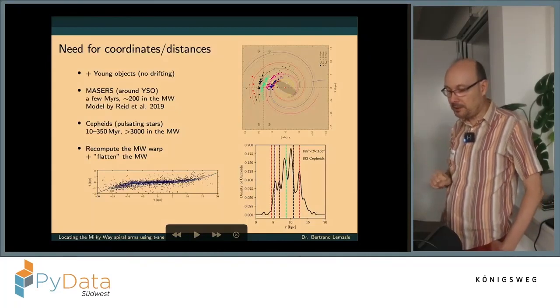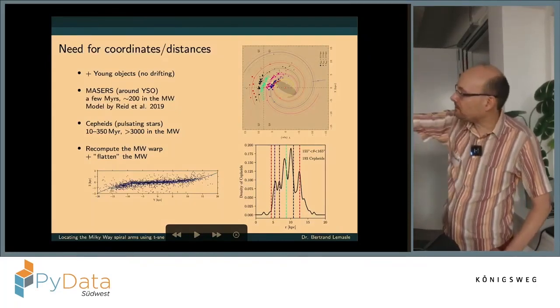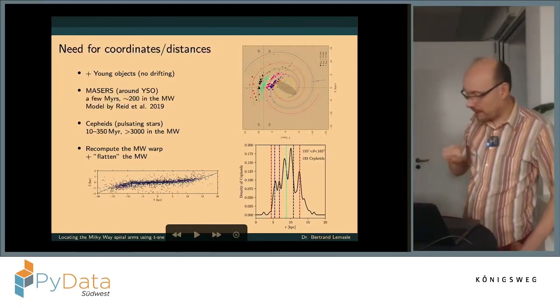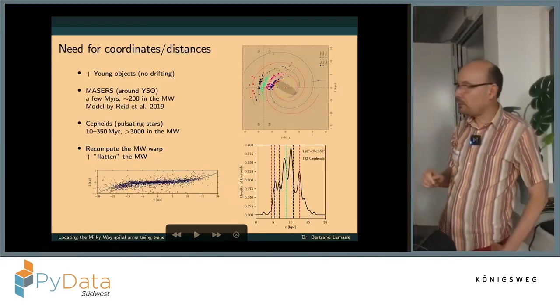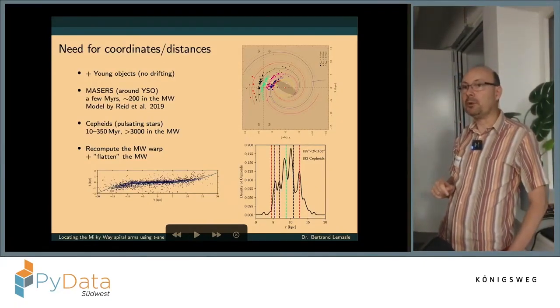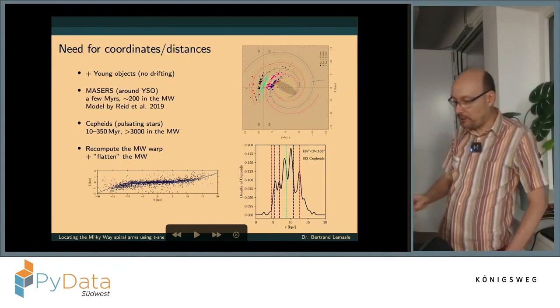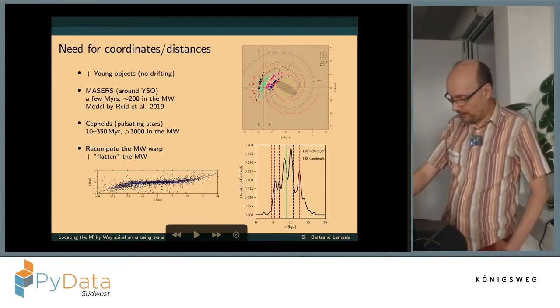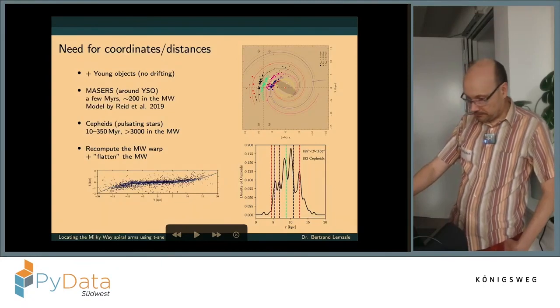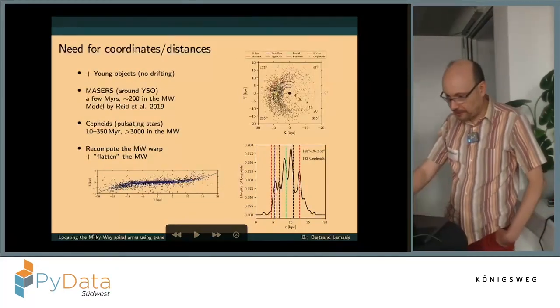And you can see here on the distribution in a specific direction that the distribution of the Cepheids as peaks, those are the black curves, that matches quite well with the spiral arm models of Reid from masers. So probably it's a good tool to also identify the spiral arms.